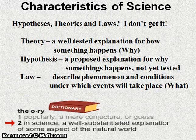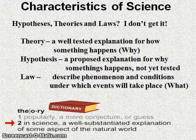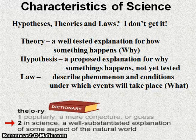Characteristics of science: hypotheses, theories, and laws — three very important terms. A theory in science is a well-tested explanation for how or why something happens. A hypothesis is a proposed explanation for why something happens which has not yet been tested, or hasn't been adequately tested to be verified. A law in science is a description of a phenomenon and the conditions under which events will take place. Typically, laws are mathematical models used to perform calculations.